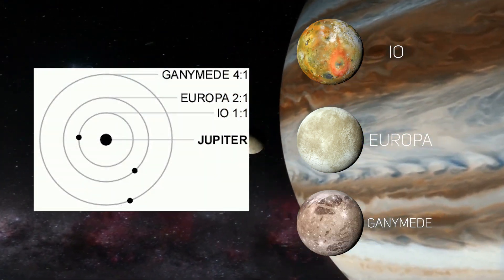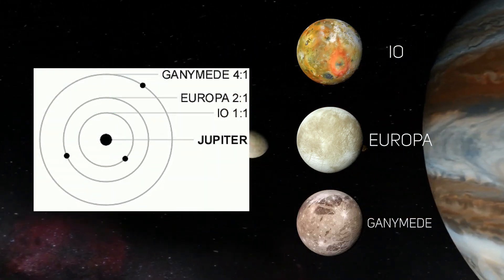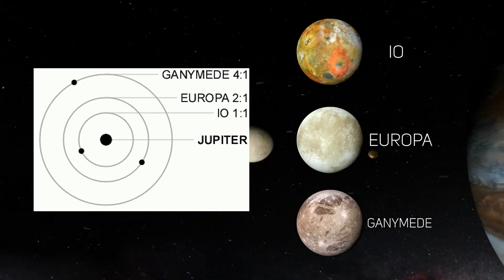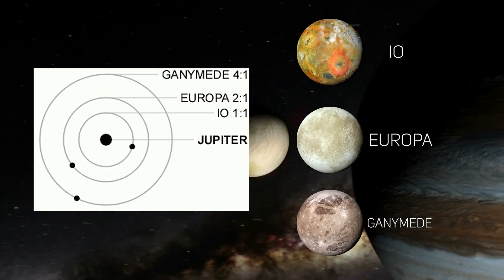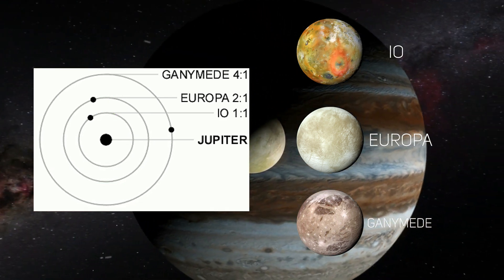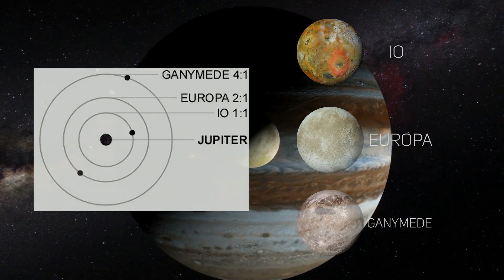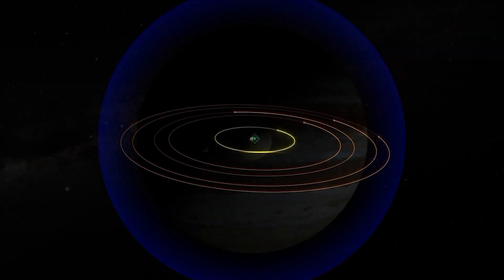For every one orbit of Ganymede, Europa completes 2 and Io completes 4, lining them up in a perfect 1 to 2 to 4 resonance chain, orbiting Jupiter like clockwork.